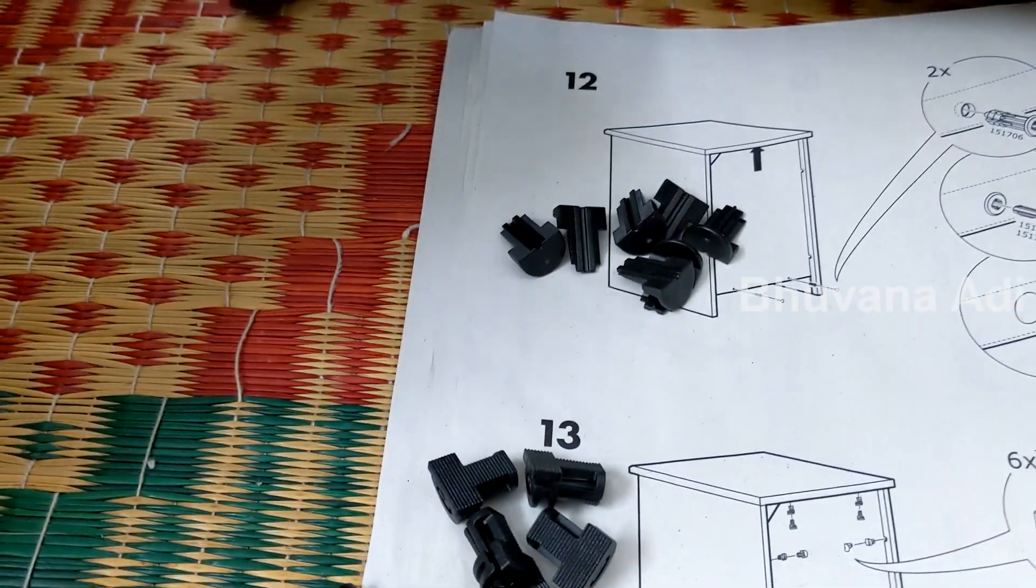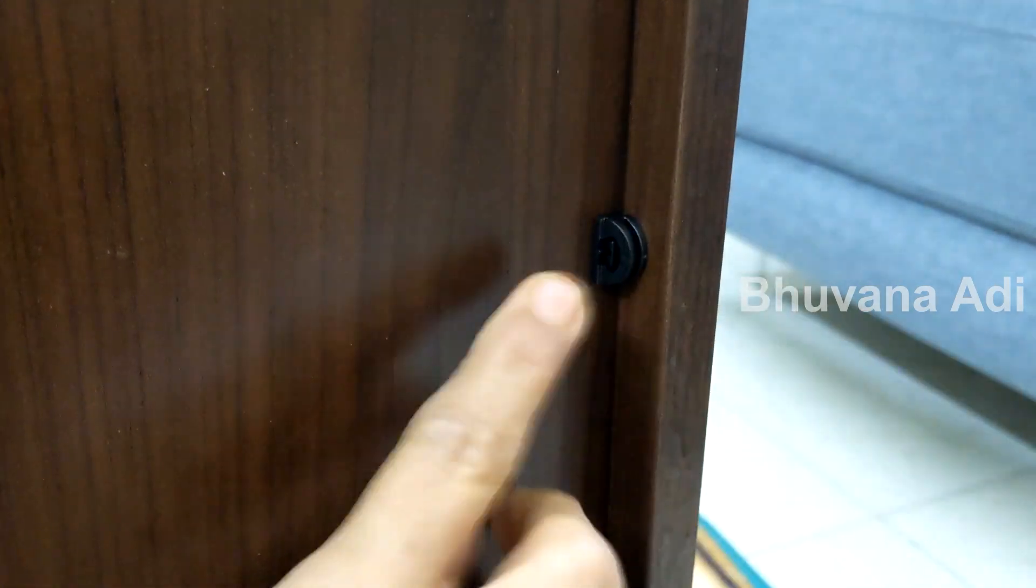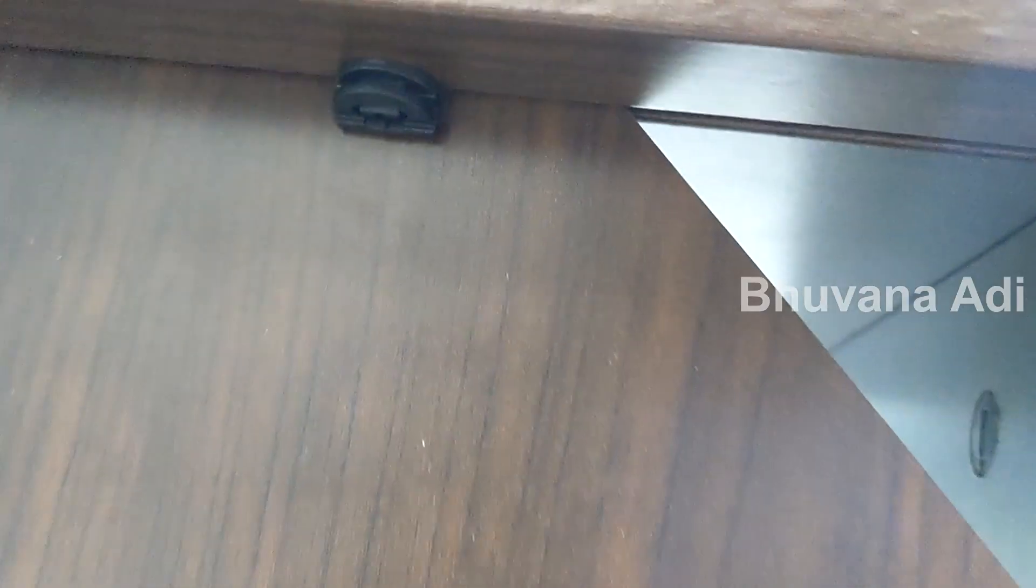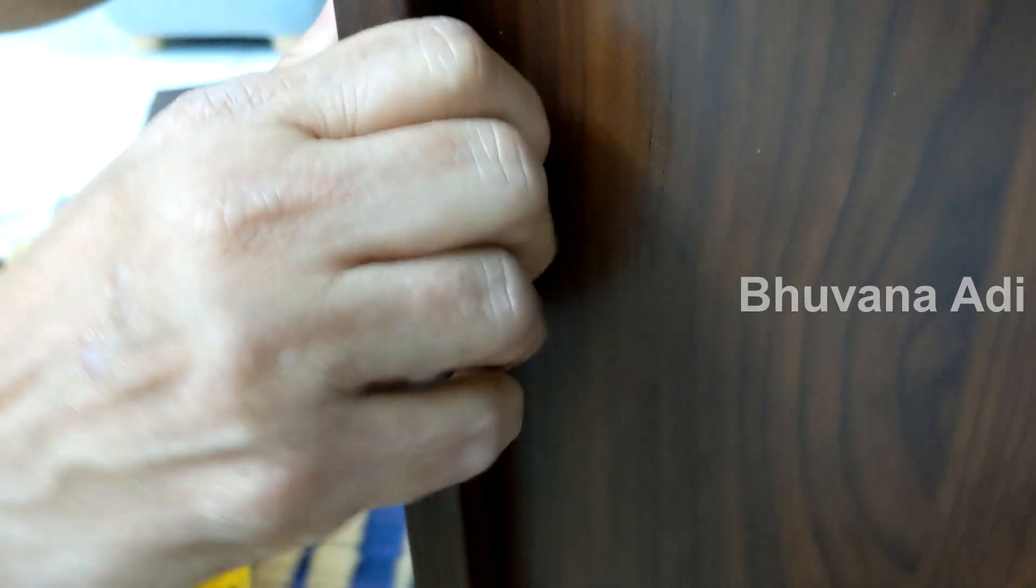Step 13 involves fixing the back side plank with this at six places with the help of these plastic wedge buttons. Now all the six buttons are tightly fitted.